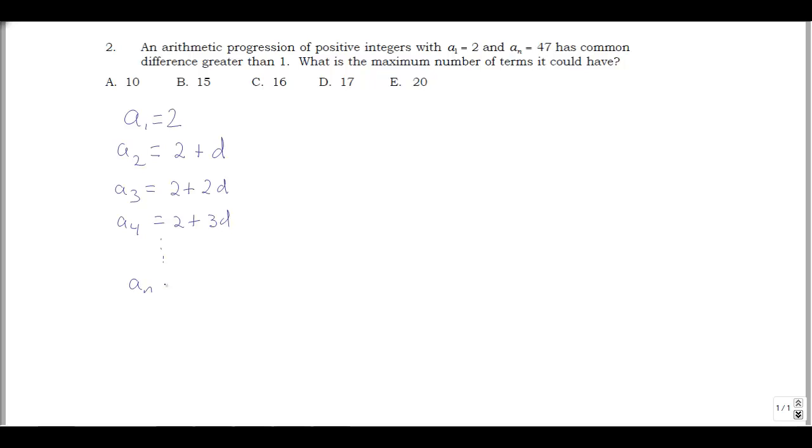And we get down here, an, now we don't know what n is, this is going to end up being 2 plus. Well, let's see, we have 2, for the third term we have 2d's, for the fourth term 3d's, so this can be n minus 1 d's. And this is also supposed to be 47.